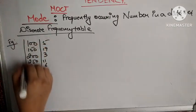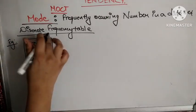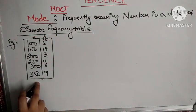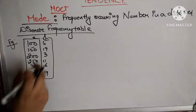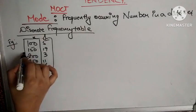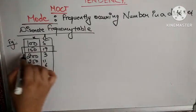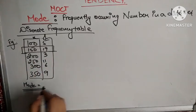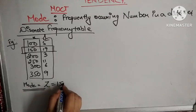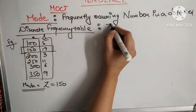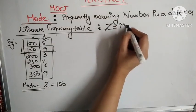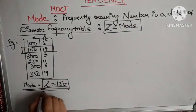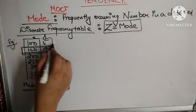Here you can see the maximum frequency is 19, which corresponds to the value 150. So this is the mode. Mode is denoted by Z, so Z is equal to 150. The maximum frequency of 19 means the most number of students have marks of 150, making 150 the mode.